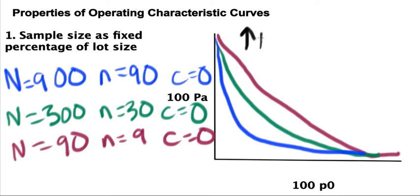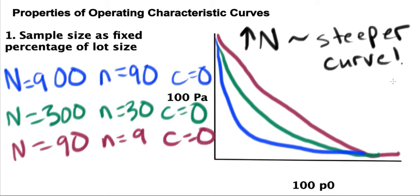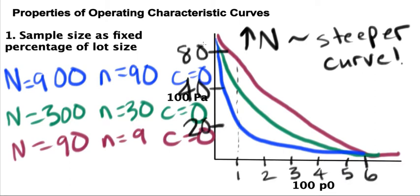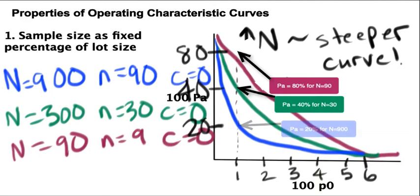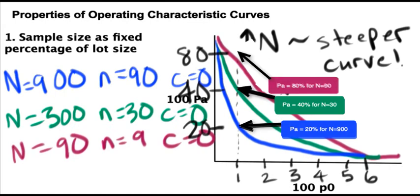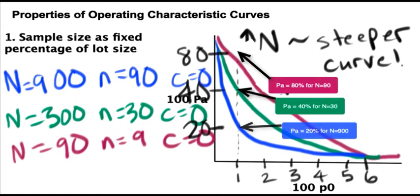So what's the significance of this property? Well, let's draw lines to see what the probabilities of acceptance for these various lot sizes would be for a process with, say, 1% nonconforming. The smallest lot size of 90 probability of acceptance would be 80%, and the probability of acceptance for a lot size of 300 would be about 40%. But as we increase the lot size to 900, the probability of acceptance significantly decreases to 20%.